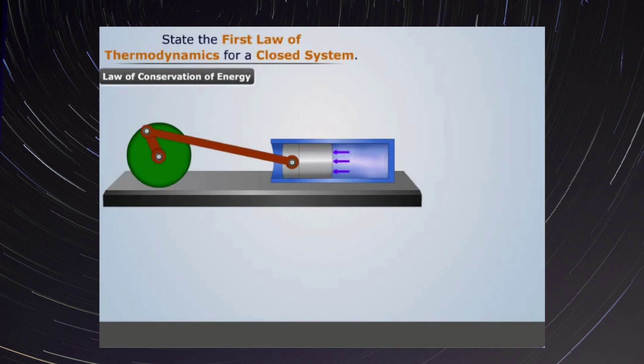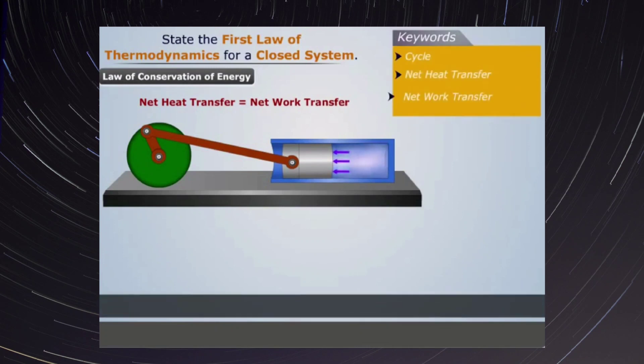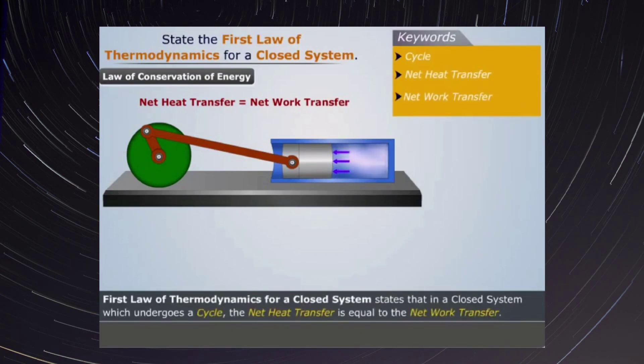When we analyze the net heat transfer and the net work transfer to the gas, we see that they are equal. This explains the first law of thermodynamics for a closed system undergoing a cycle. Thus, the first law of thermodynamics for a closed system states that in a closed system which undergoes a cycle, the net heat transfer is equal to the net work transfer.